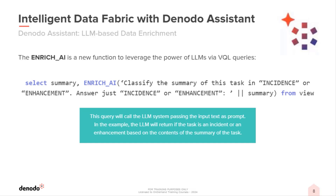Let's take a look at an example of how this function can be used for classification, an area where LLMs excel. With a VQL query, we can ask the LLM to determine whether a task is an incident or an enhancement based on a summary, such as a message from one of our customers. This is just one example, but the potential is enormous.